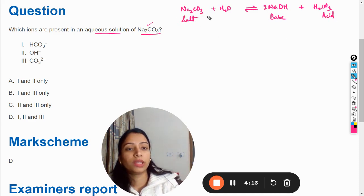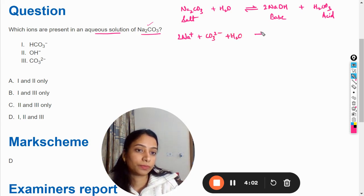Now this salt in the solution will be in the form of ions: 2Na+ and CO3²⁻ plus H2O. Again, this sodium hydroxide is a strong base, so it will be in the form of ions